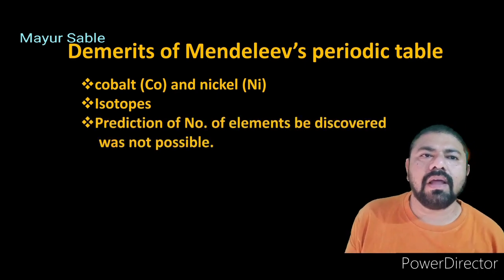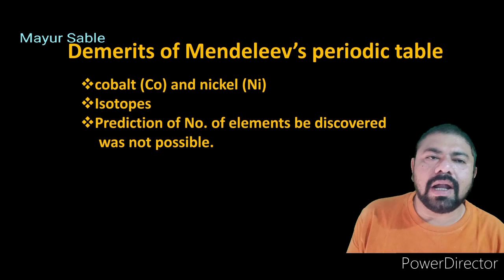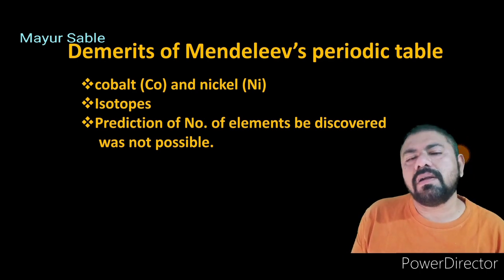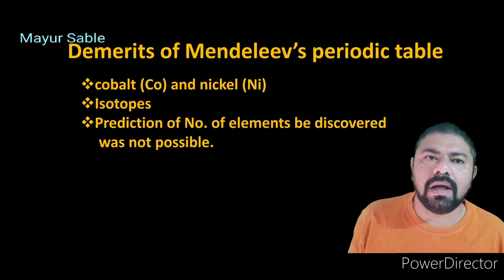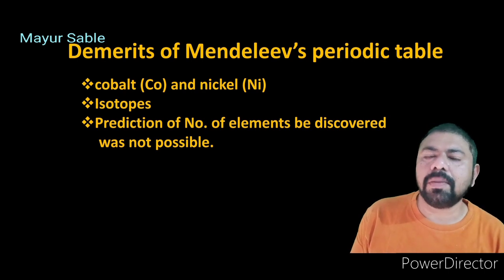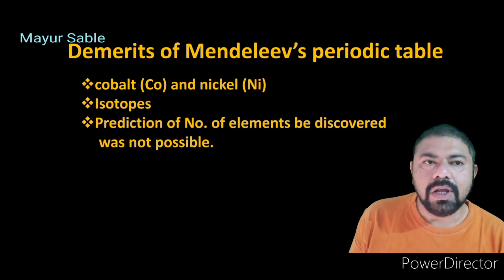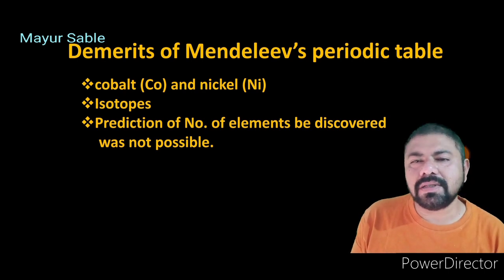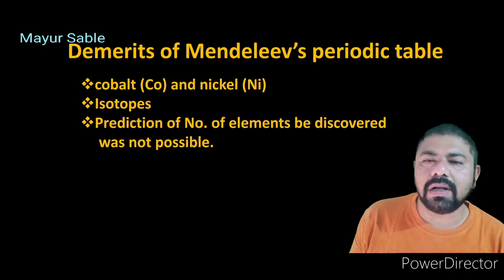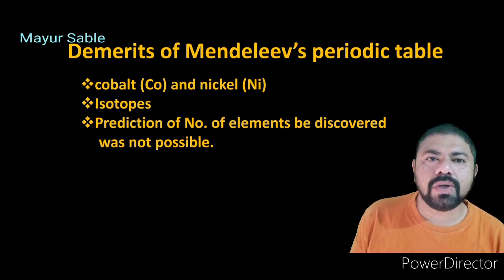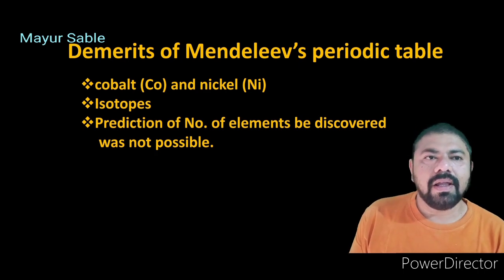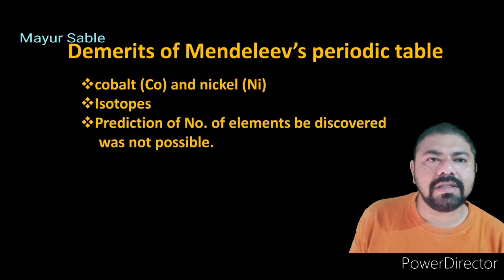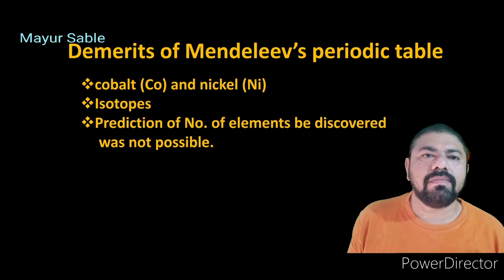The second demerit involves isotopes, which were discovered long after Mendeleev's periodic table was established. Isotopes possess the same chemical properties but different atomic masses, and this posed a challenge in placing them correctly within Mendeleev's periodic table.